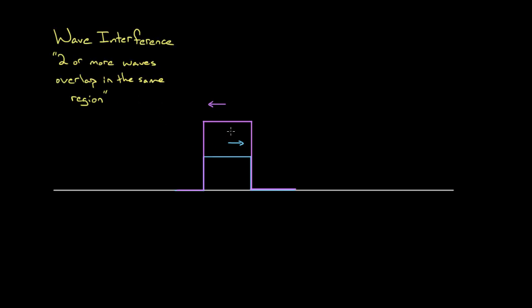So what's going to happen? The string can't be in two places at once — there can only be one string and one shape. The way you find the total wave is simply by adding up the contributions of the two overlapping waves. So the height of the total wave, y_total, equals the height of the first wave y₁ plus the height of the second wave y₂. If you're familiar with wave equations, you could plug in those two wave equations, add them up, and get a total wave equation.